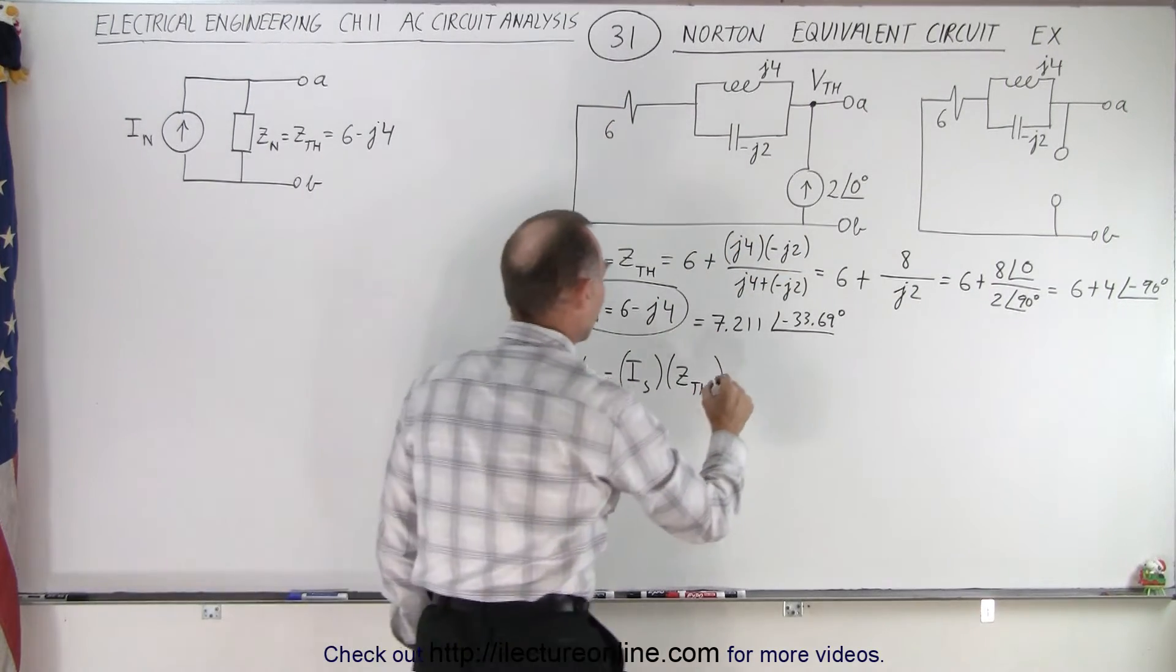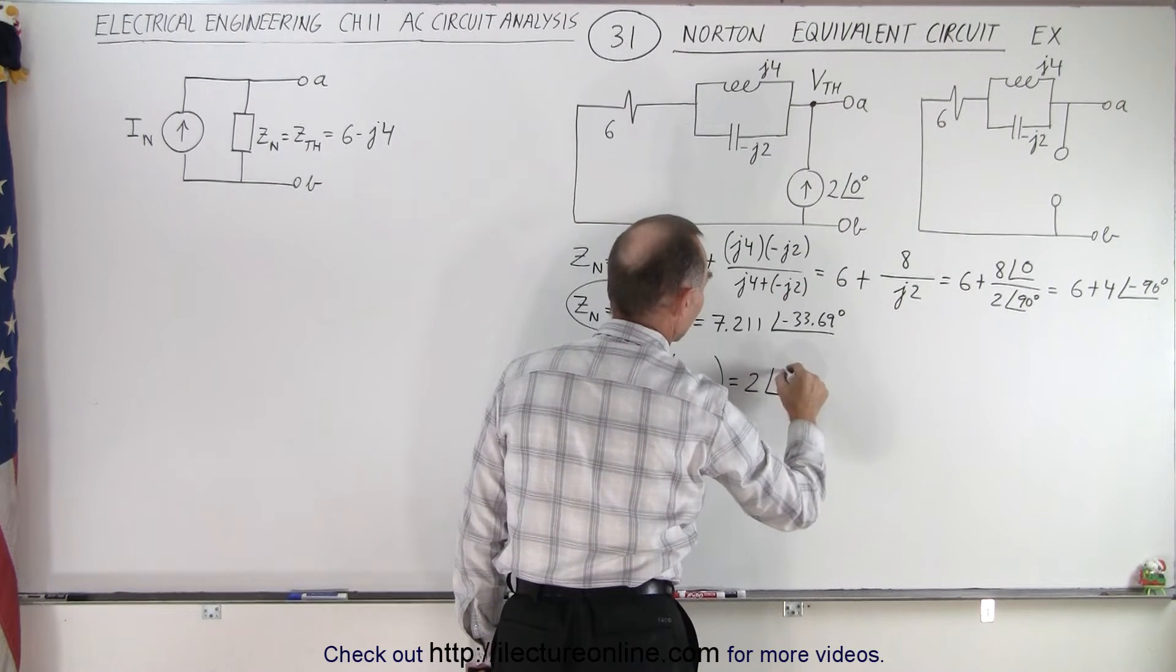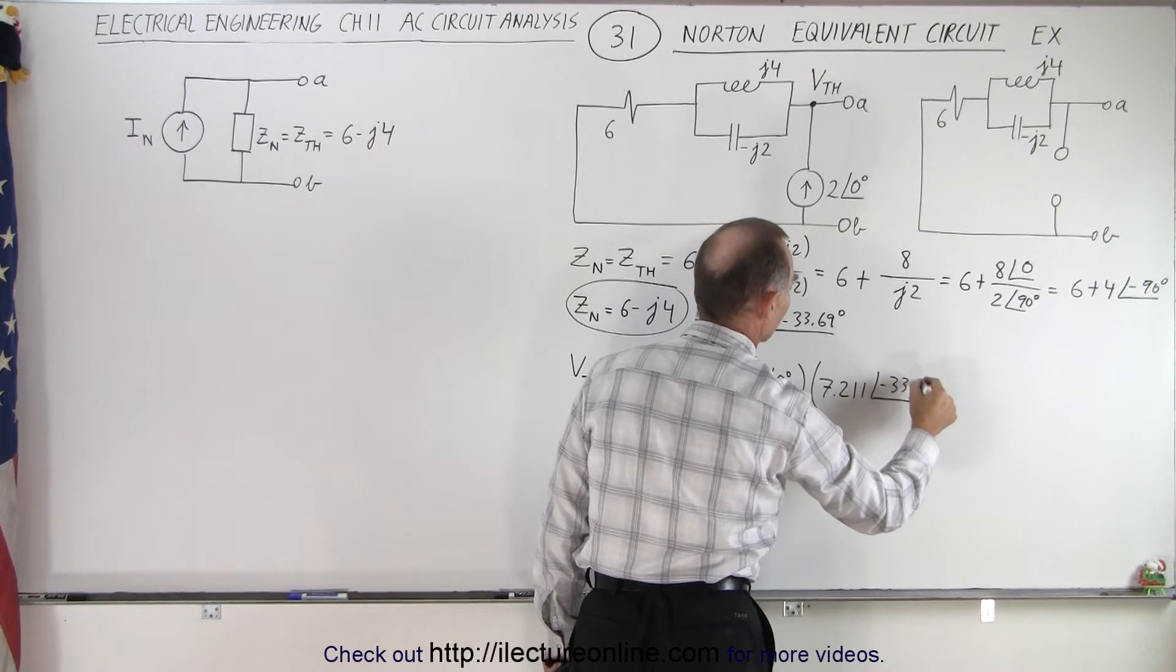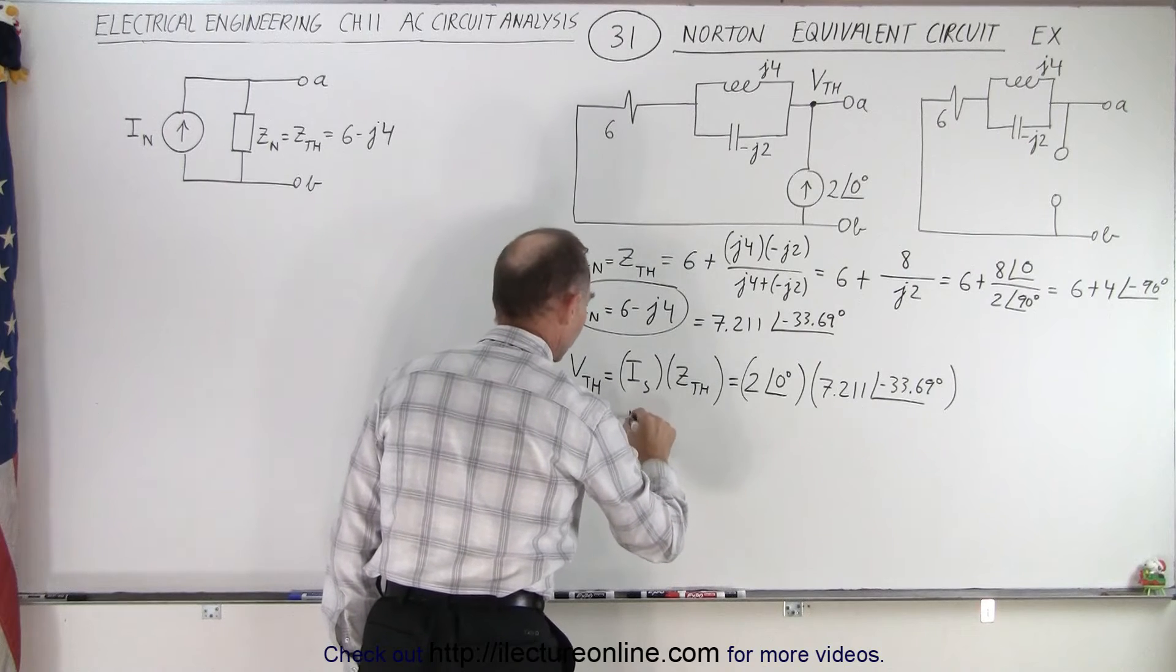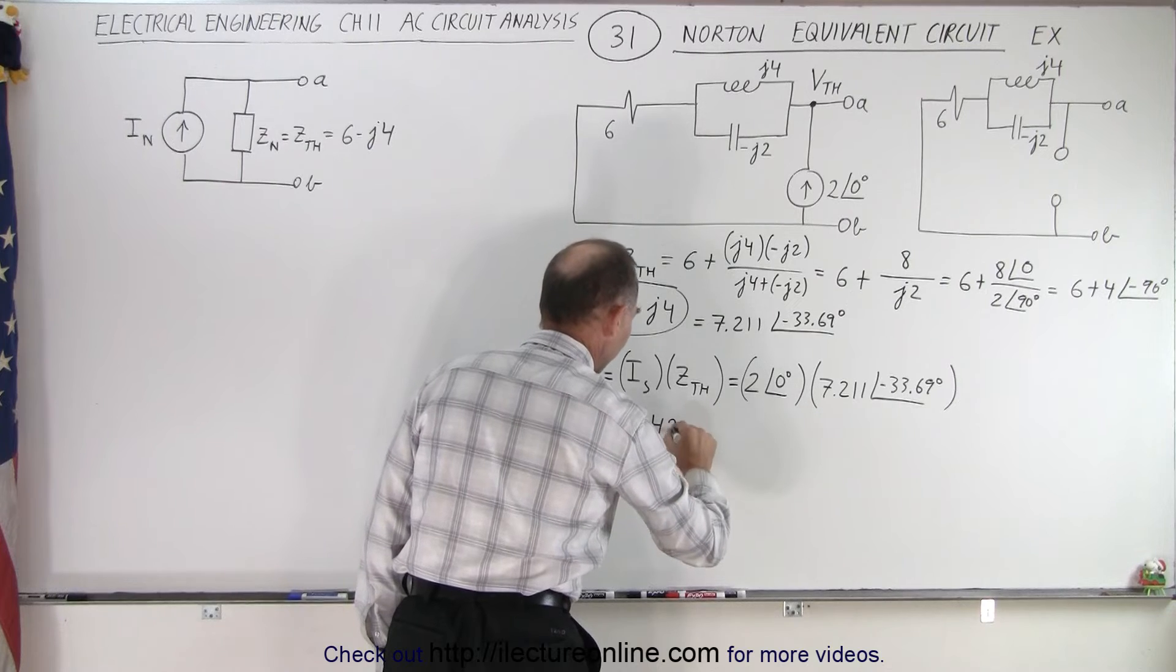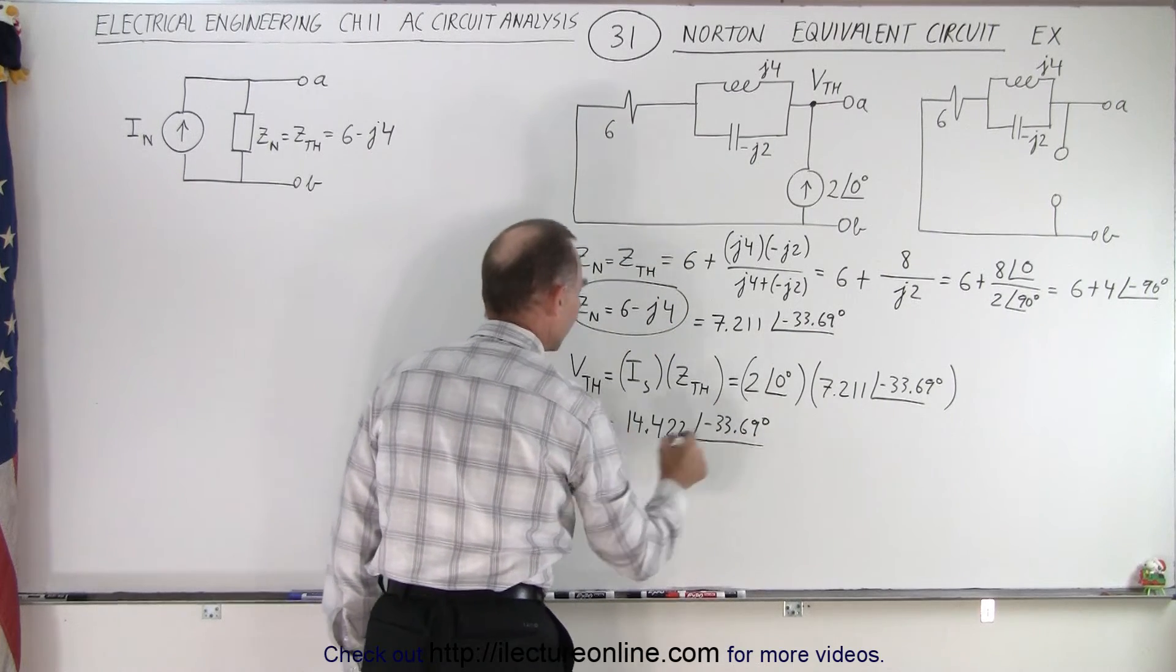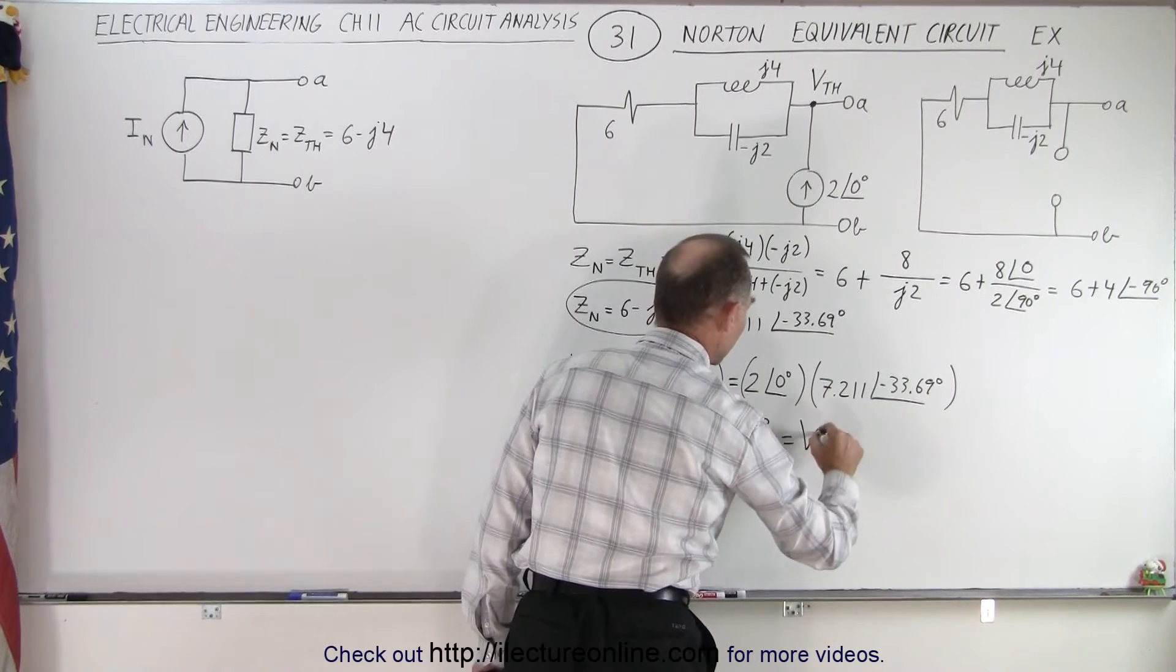So that becomes I of the source, which is 2 with a phase angle of 0 degrees, multiplied times 7.211 with a phase angle of minus 33.69 degrees. And so this is equal to 14.422 with a phase angle of minus 33.69 degrees. And that will be the Thevenin voltage, which is also going to be equal to the voltage from A to B.